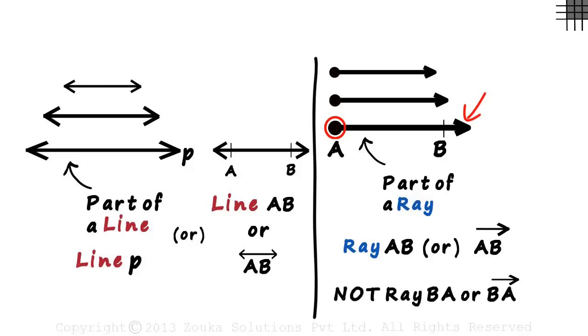This means it cannot be written as ray BA or BA with a tiny ray over it. But line AB can also be written as line BA. We just need to be careful when we are dealing with a ray.